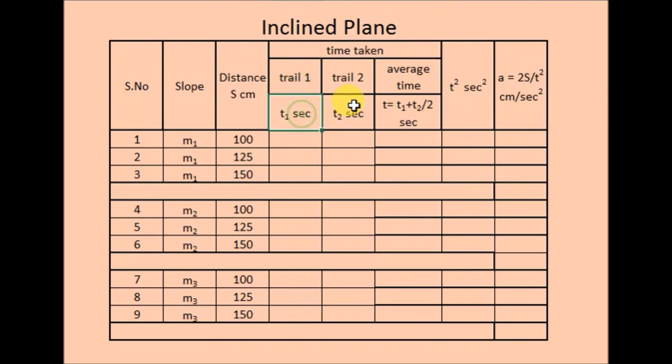Now the time taken, trial 1, t1 seconds, trial 2, t2 seconds, average time will be t1 plus t2 by 2. And square of the time, t square second square and finally a equal to 2s by t square, centimeter by second square.